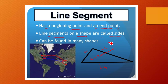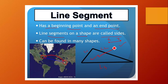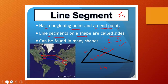Let me show you a line segment. If I name the endpoints X and Y, I have Line Segment XY. Symbolically, you write XY with a small bar over it — that is the way to write a line segment.